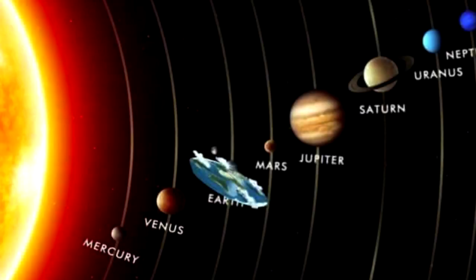Another common question posed by globe-earthers is: if the Earth is flat, then why are all the other planets round?